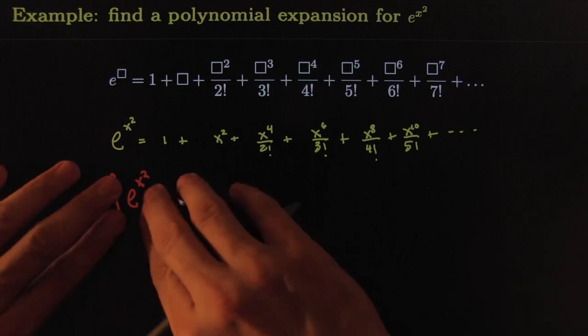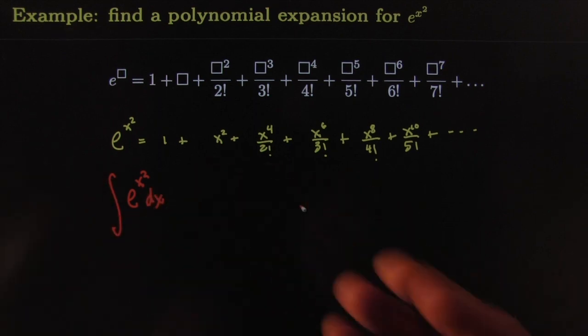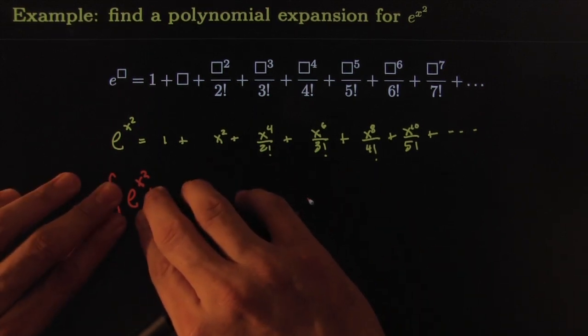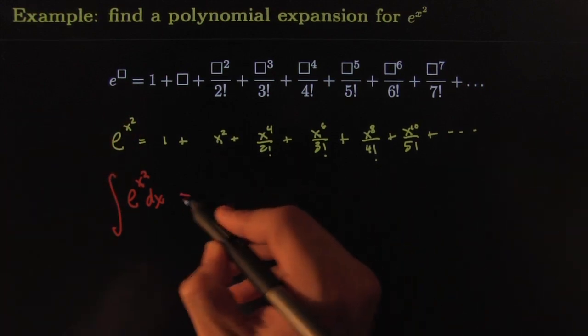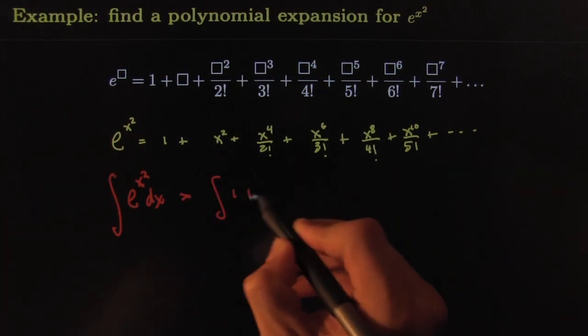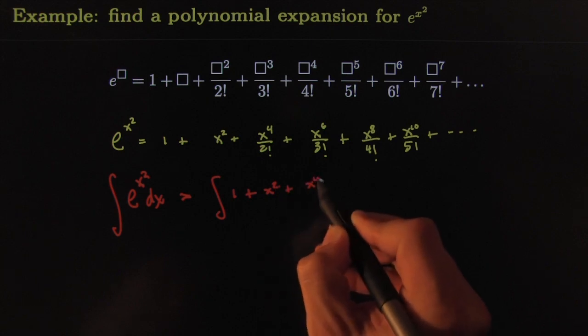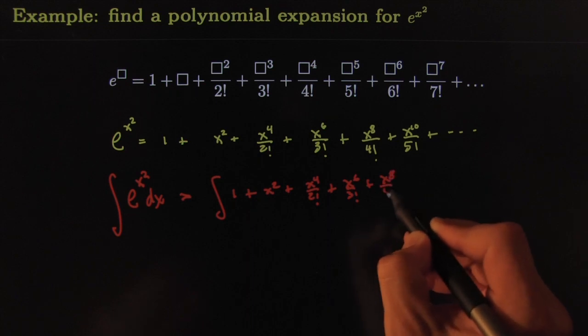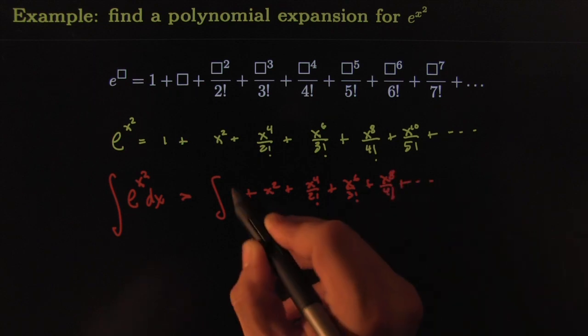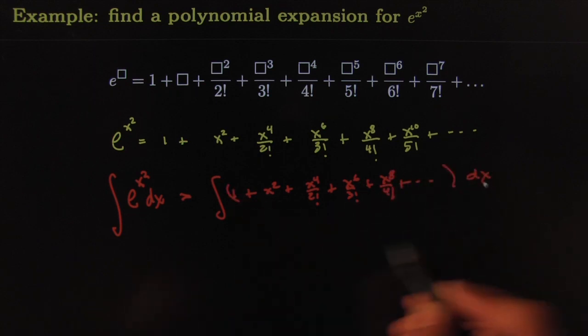Wouldn't it be nice if we could exchange that guy right there, that monster, if we could exchange it for a polynomial? Where would I get a polynomial to exchange that for? Whoa! What? Right here. This becomes the integral of 1 plus x square plus x to the 4th over 2 factorial plus x to the 6th over 3 factorial plus x to the 8th over 4 factorial and on and on and on. All that with respect to x. Well, how do you integrate that?